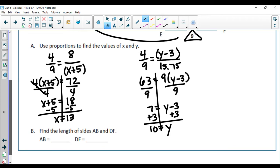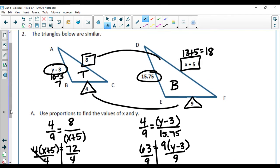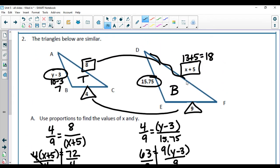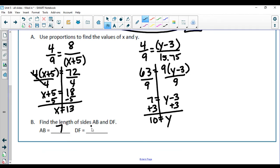So down here it asked me to find AB, which we just found out was 7. And it asked me to figure out DF, which is right along here, which we just by plugging in found out was 18.